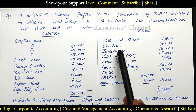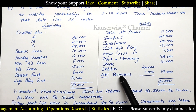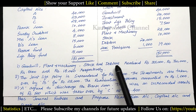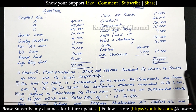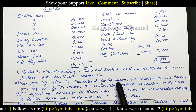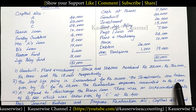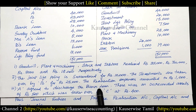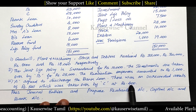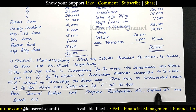On the asset side: cash at bank, goodwill, investment, joint life policy, profit and loss account, plant and machinery, stock, and debtors minus provisions. The adjustments are: goodwill, plant and machinery, stock and debtors realized for rupees 35,000, 30,000, 8,000 and 18,000 respectively. The joint life policy is surrendered for rupees 10,000. The investments are taken over by B for rupees 25,000. The realization expenses amounted to rupees 1,000. A agreed to discharge the bank loan. There was an unrecorded asset of rupees 500 which was taken over by C at rupees 400.